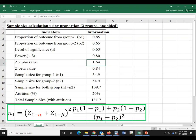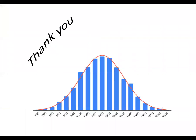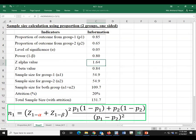Then the Z value is 1.64, and the sample size is 131.